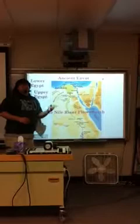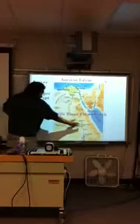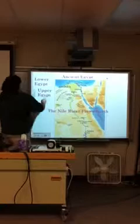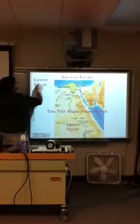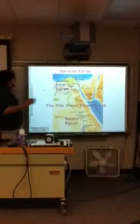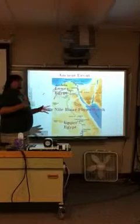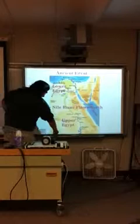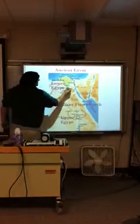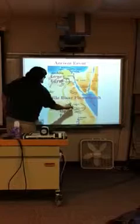Now, because the Nile ran from the south to the north, it was mainly because of the elevation, which causes upper Egypt to be down here and lower Egypt to be right here. And an interesting thing is most of the pyramids, or where the ancient kings had their places of worship, were all around down here in this area. And with the Nile, they were able to travel up and down.